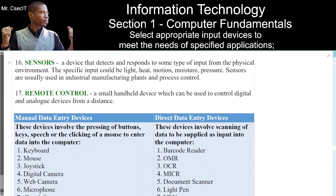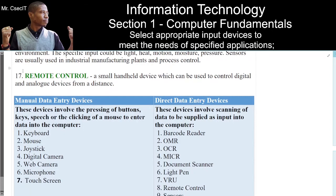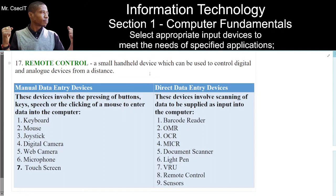A device that detects and responds to some type of input from the physical environment. The specific input could be light, heat, motion, moisture, or pressure. Sensors are usually used in industrial manufacturing plants and process control. Number 17. Remote control. A small handheld device which can be used to control digital and analog devices from a distance.